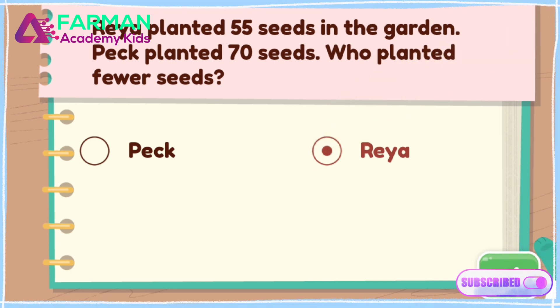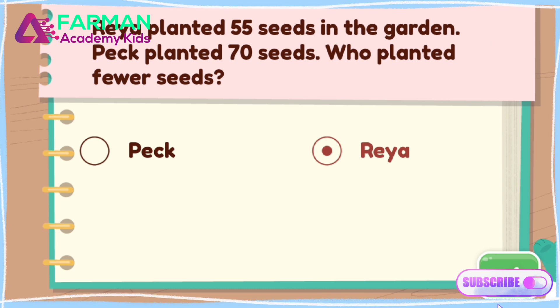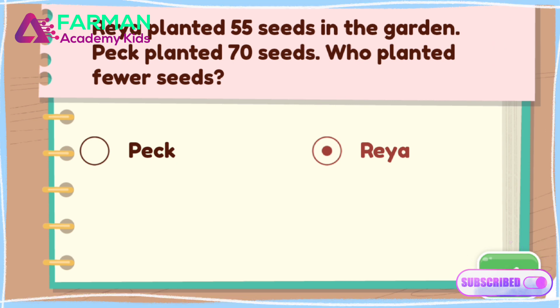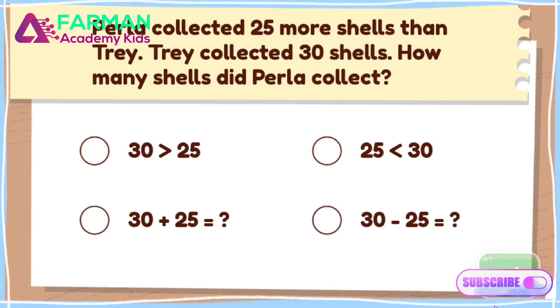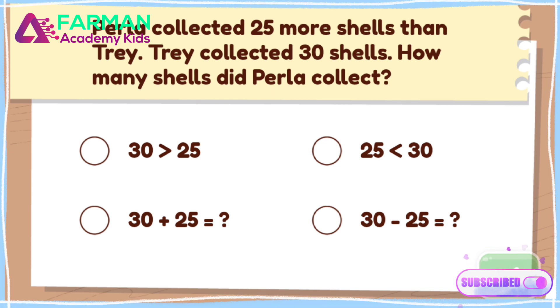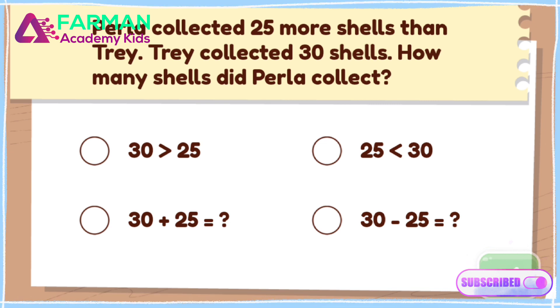55 is less than 70. Rhea planted fewer seeds. Which one matches the word problem?